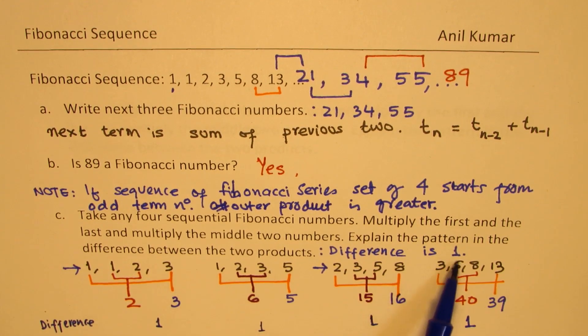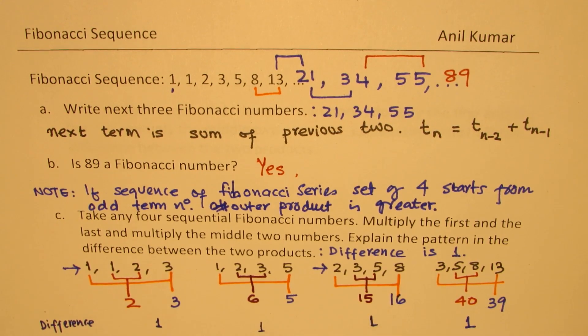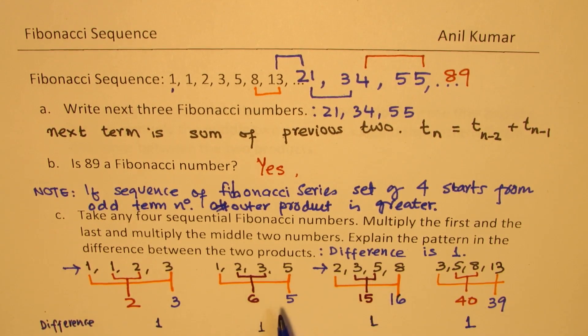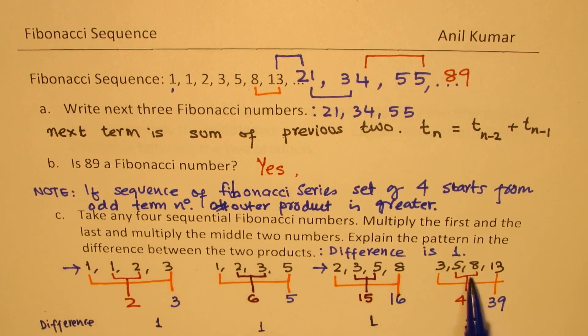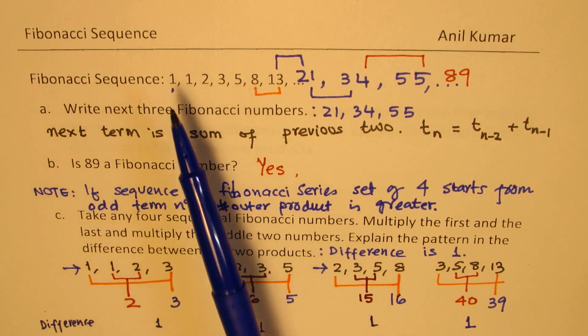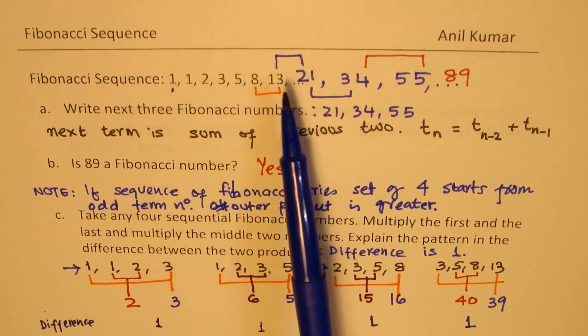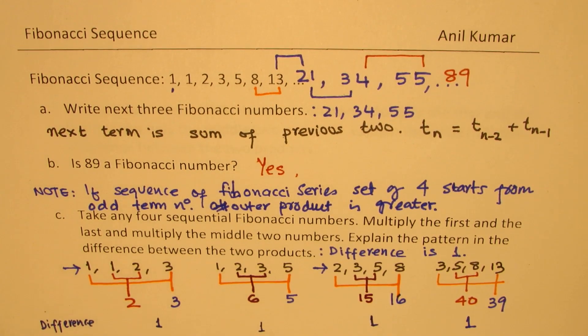I am purposely not using negative 1 to the power of n in this series, since this video is for junior and middle school students who might get confused with negative 1 and its powers. We are using very simple language here. We're just saying the difference is 1, and you can note that the product of the outer numbers is greater in alternate sequences if you're starting with term numbers 1, 3, 5—the odd numbers. Is that clear?